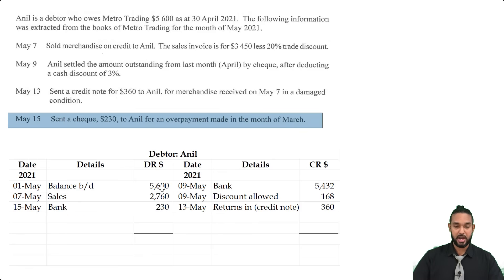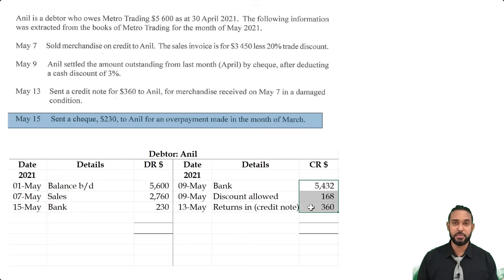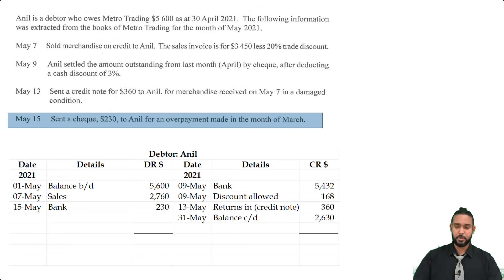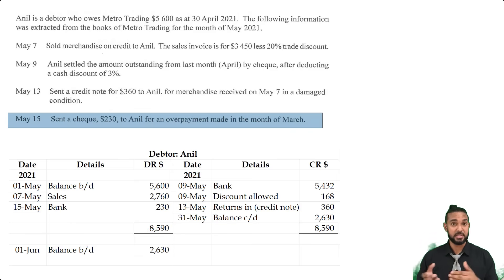To balance off the account, you add up the transactions on the debit side to get a total, then add up the credit side. They're most likely not going to be the same, so you find the difference — that's the balance carried down. The debit side has about 8,590 while the credit side is lower. So 2,630 goes on the credit side as balance c/d, making both sides total 8,590. The balance carried down from the credit side is then brought down on the debit side, which makes sense because Anil is a debtor, and assets have debit balances.